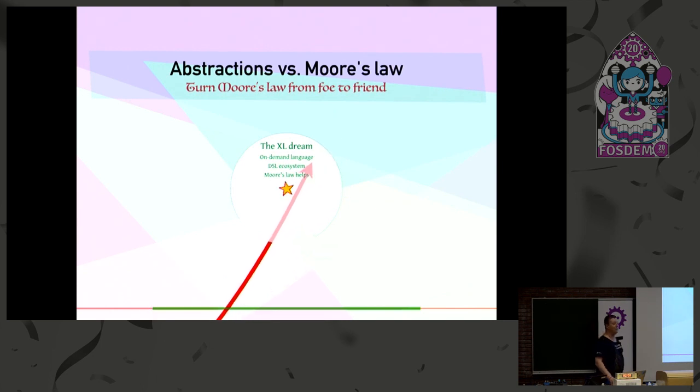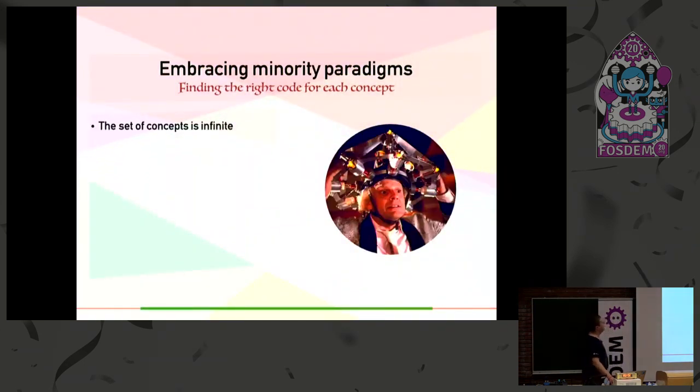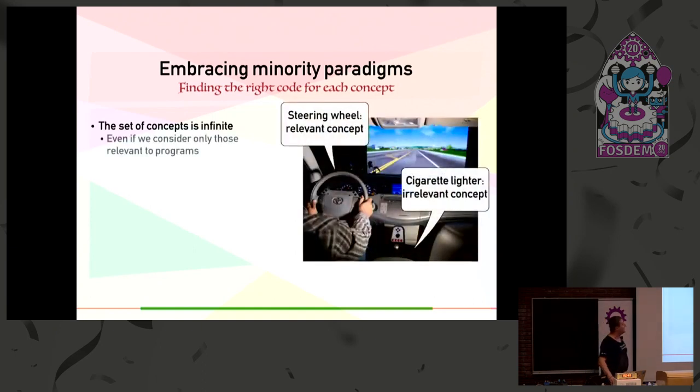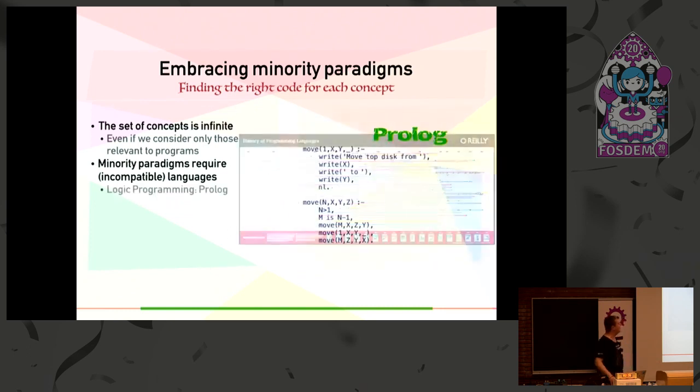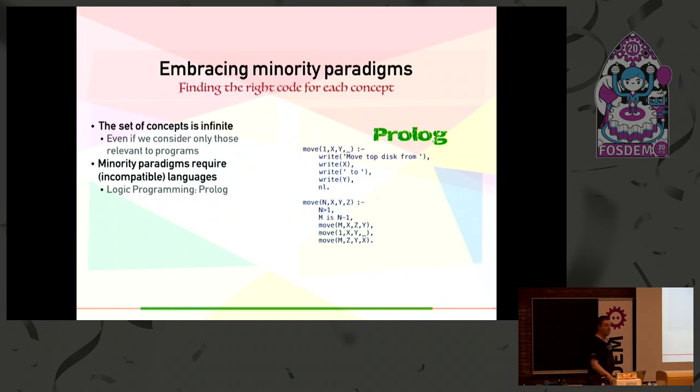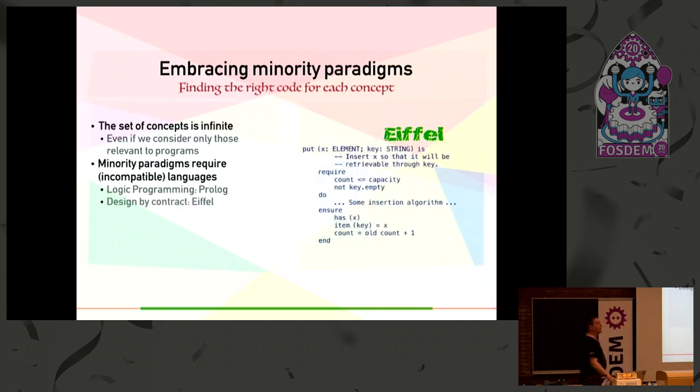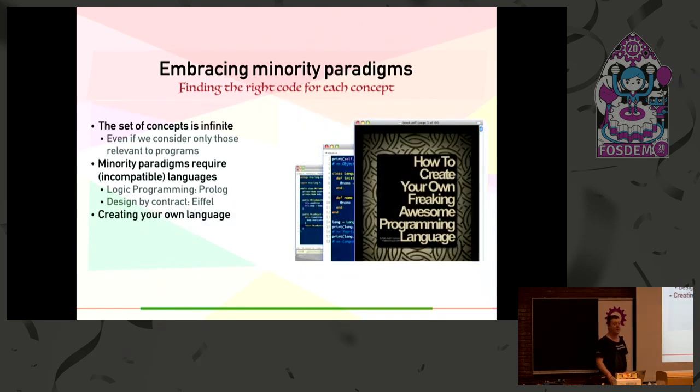It's important because the set of concepts is infinite. For instance, even if we consider only those that are relevant to a program, like here we can exclude the cigarette lighter if it's a car simulator, we still need a number of minority paradigms. That means you invent your own incompatible language every time. For instance, you have logic programming, that was a language problem. Or you have design by contract, that made it to a few other languages, but basically for today the best implementation of that remains Eiffel. In the end, you create your own language like I just did basically.